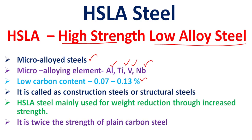HSLA steel is also called construction steel or structural steel. It is mainly used for weight reduction purposes — weight reduction is achieved through increased strength.